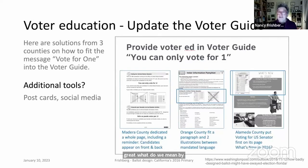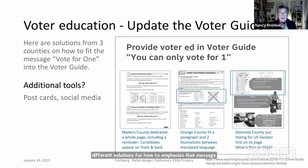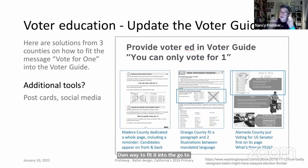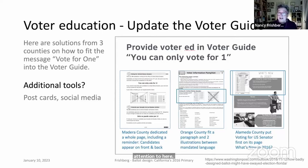Voter education also helps prevent errors. County officials were urged to provide information in the voter guide emphasizing the 'Vote for One' message. Three different counties found different ways to fit this message into their county voter pamphlet. In California, voters receive two pamphlets — one from the Secretary of State and one from the local county elections office.